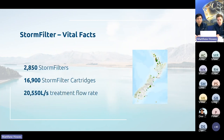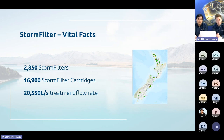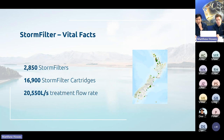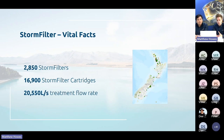Some vital statistics: in New Zealand alone there are at least 2,850 Storm Filters with a total of nearly 17,000 Storm Filter cartridges, treating 20,550 litres per second every time it rains. In the United States since 2009, over 15,000 Storm Filters have been installed, with many thousands more in Australia and Italy — at least 50,000 systems worldwide. It is the world's most widely used and adopted manufactured treatment device.